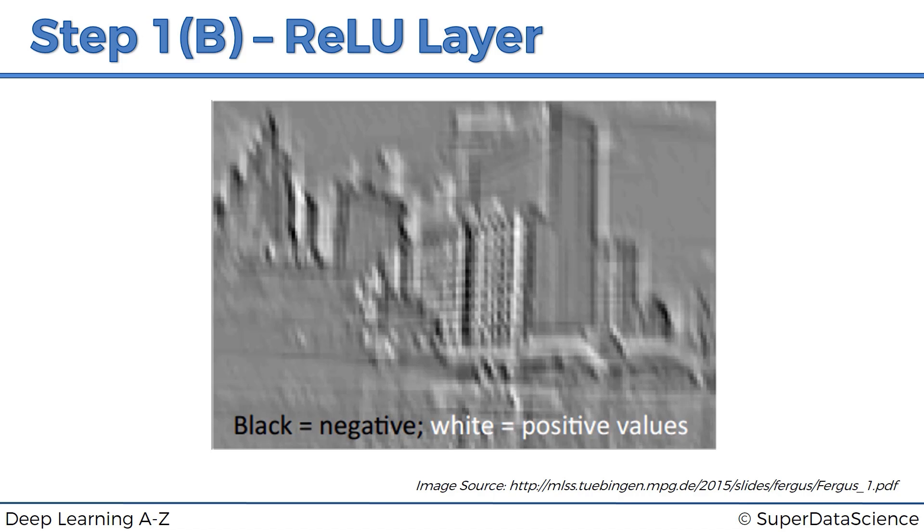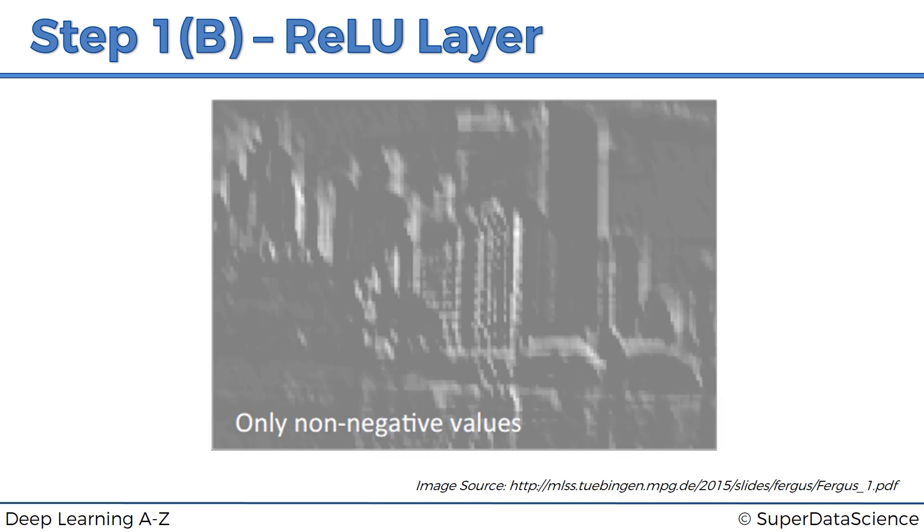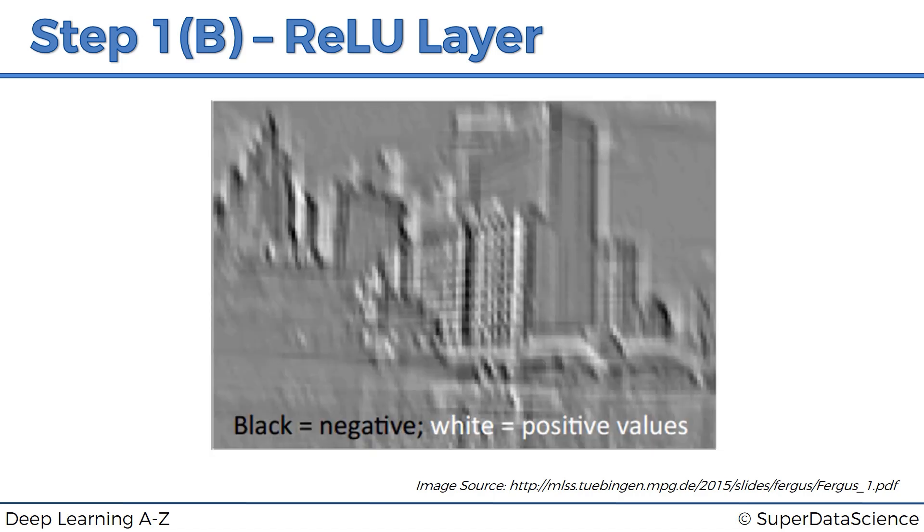And what a rectified linear unit function does is it removes all the black. Anything below zero turns into zero. And so from this, it turns into this. And so it's pretty hard to see what exactly is the benefit in terms of breaking up linearity.